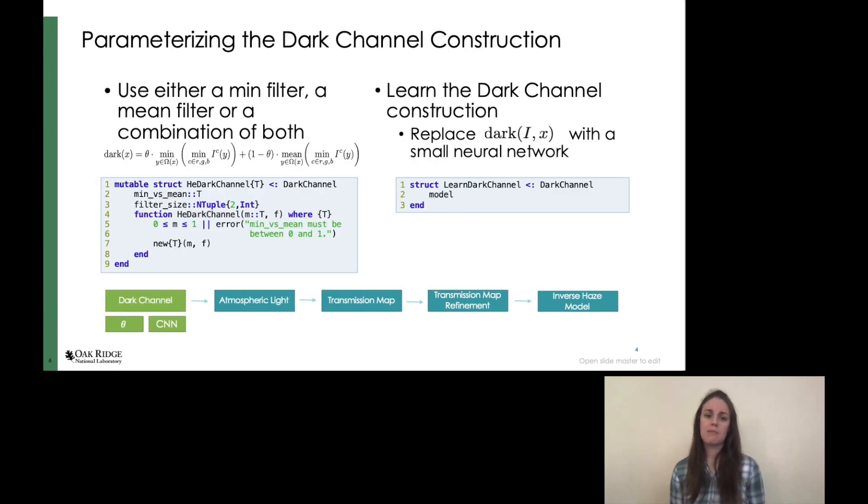So to begin applying differentiable programming to our dehaze method, we needed to parameterize it. We began by parameterizing the dark channel construction. We do this in two ways. First, by allowing the dark channel to either use a min filter, a mean filter, or a combination of both by introducing a parameter theta. We then also allowed the entire dark channel function to be replaced with a small convolutional neural network.